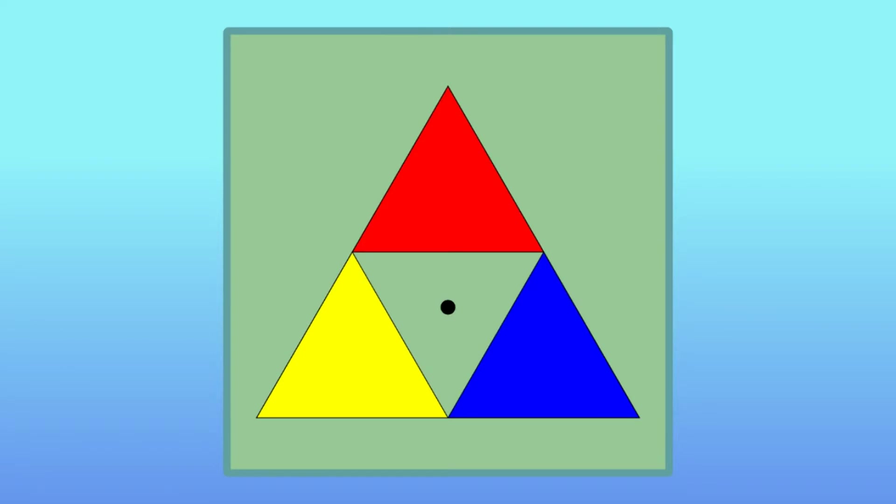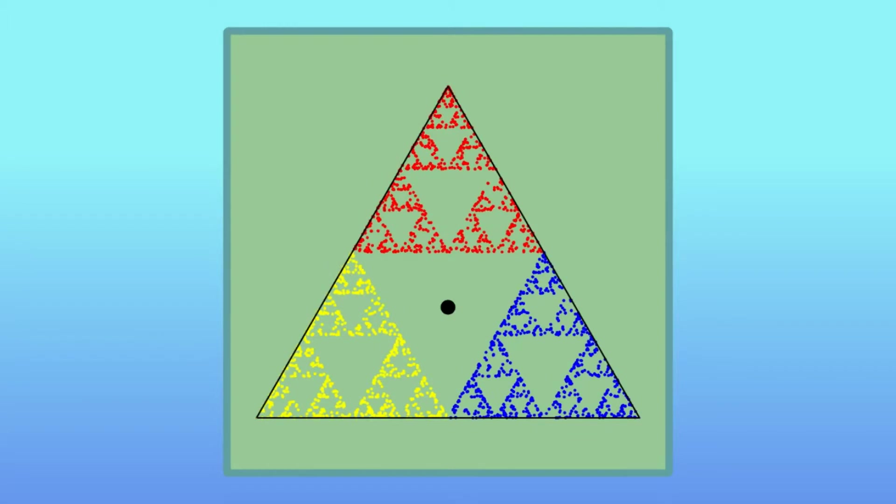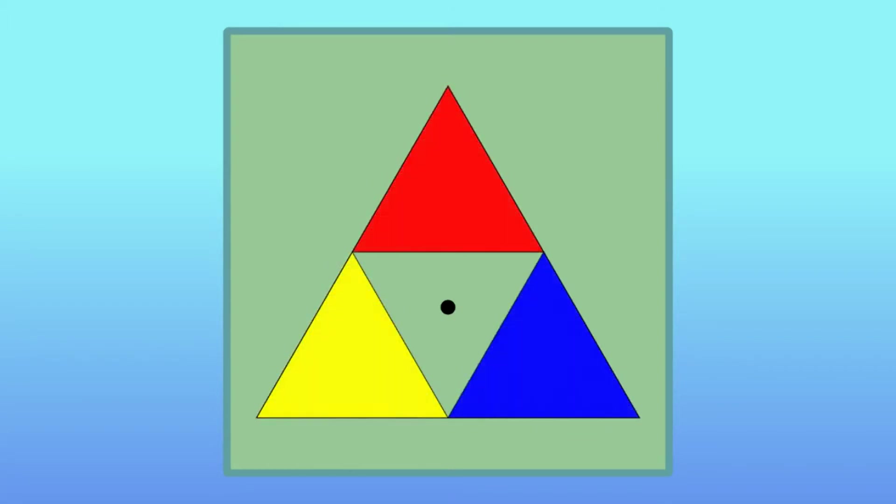On a first glance, it seems that we haven't done too much. But actually, we already have a non-trivial result, which gives us a way to start understanding this process. Instead of trying to understand the full final image, which is quite complicated, let us simplify the problem again. Suppose that we can't really see the exact location of our points, but only in which of the color triangles they are. Can we say something now?